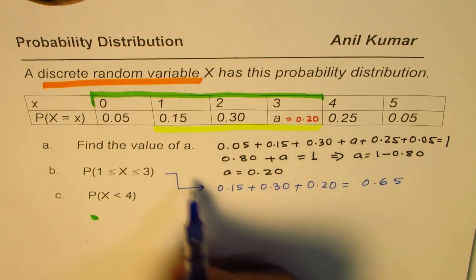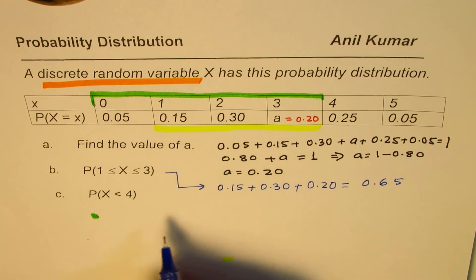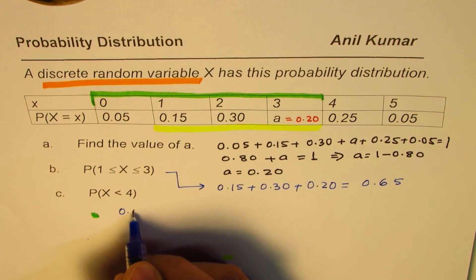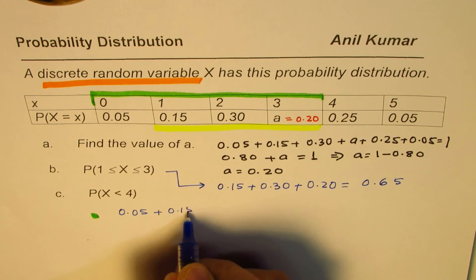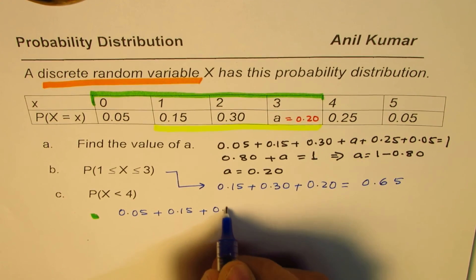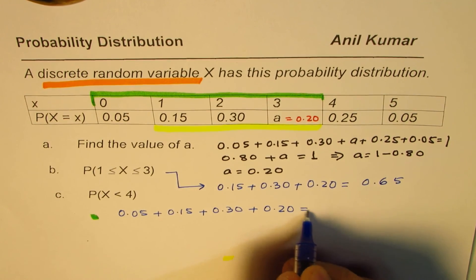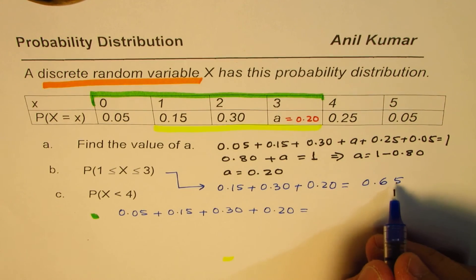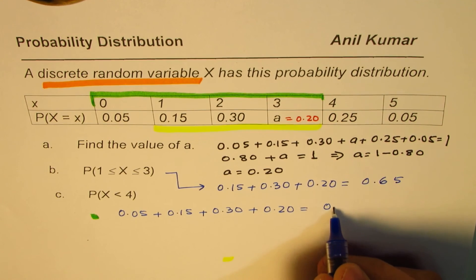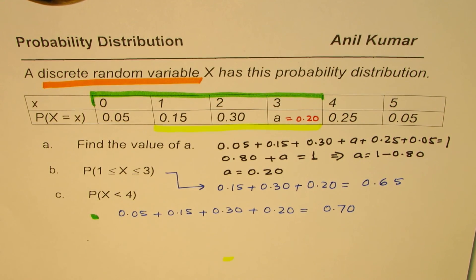So let's add this up and find the result. So it is in this case, previous probability plus 0.05. So basically, 0.05 plus 0.15 plus 0.30 plus 0.20. So it is 0.05 more than this, so 0.70.